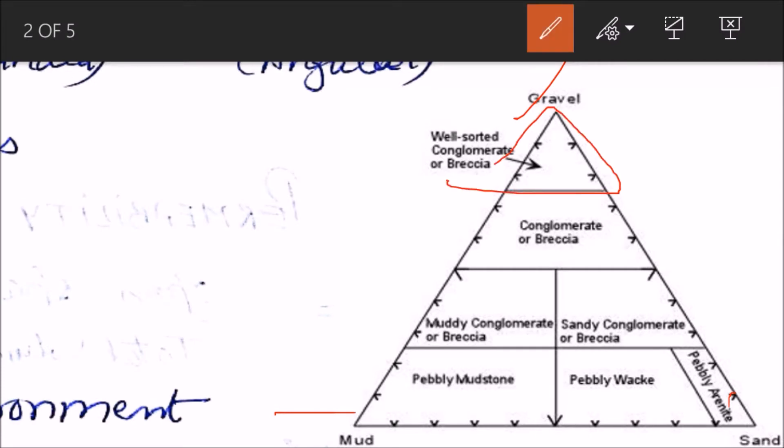They'll be poorly sorted, not that well sorted conglomerates and breccia. Here it will be towards mud. See, we are from here approaching towards increase in the amount of mud size sediments. So muddy conglomerate or breccias.